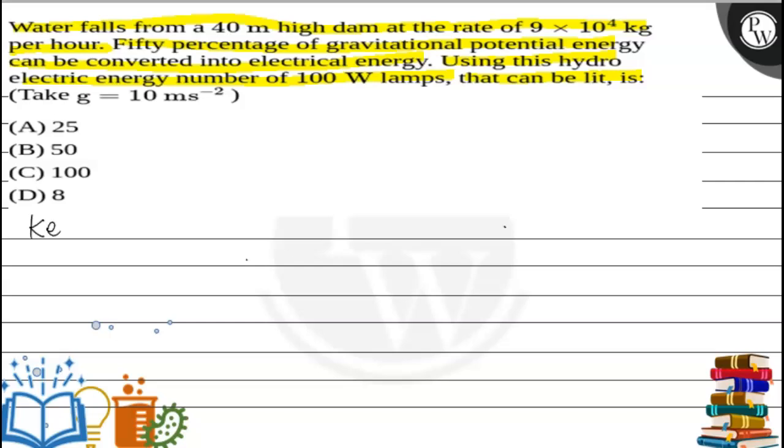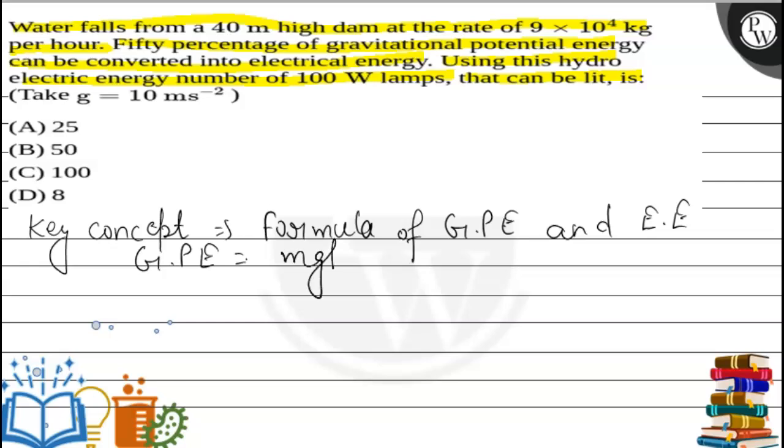The key concept for this question is the formula of gravitational potential energy and electrical energy. The formula of gravitational potential energy is mgh, where m is the mass, g is the acceleration due to gravity, and h is the height of the tank. Electrical energy is power times time.